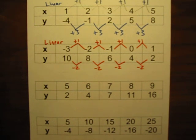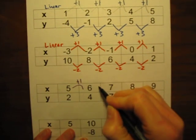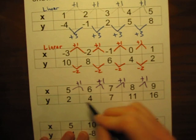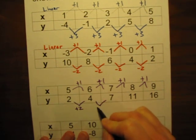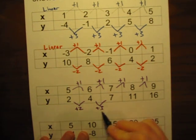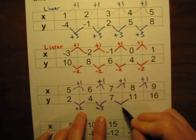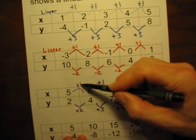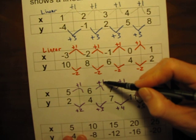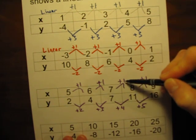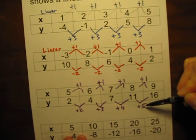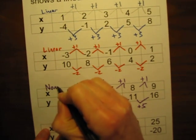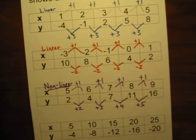Let's look at data table number 3. Again, the x's are going plus 1 each time. What are the y's doing? From 2 to 4 is plus 2. From 4 to 7 is plus 3. Already we're seeing variation. From 7 to 11 is plus 4. From 11 to 16 is plus 5. So when x changes by plus 1, y changes by plus 2, then plus 3, then plus 4, then plus 5. That is not a constant rate of change — it is changing by greater and greater amounts every time. So this is non-linear.